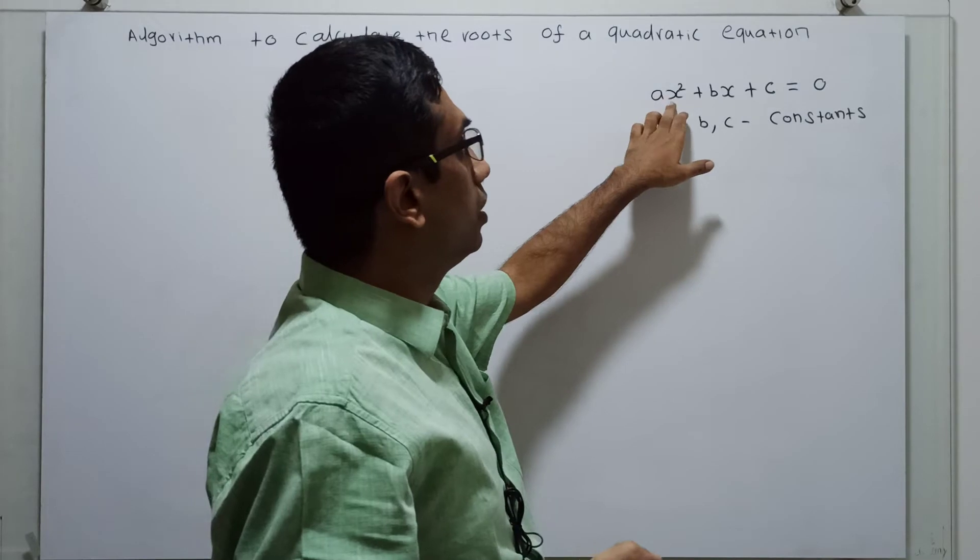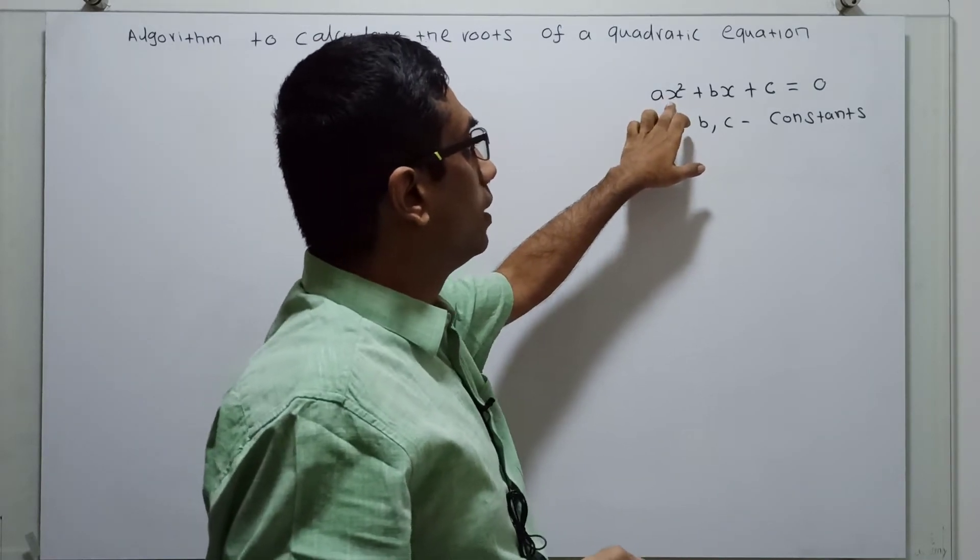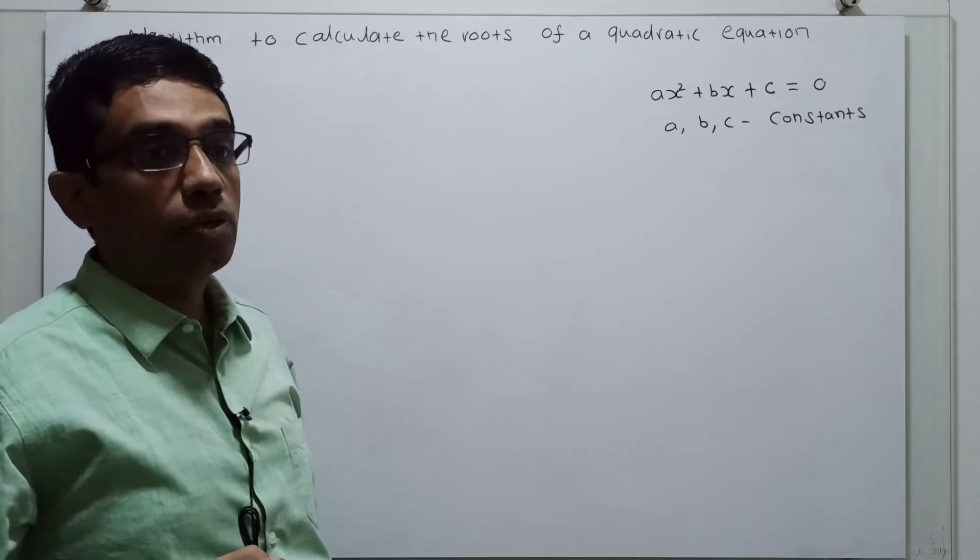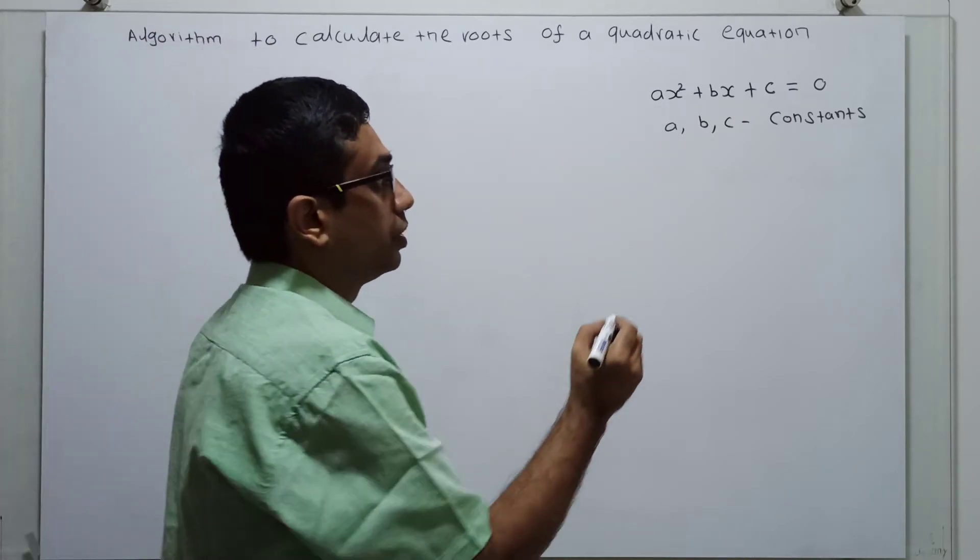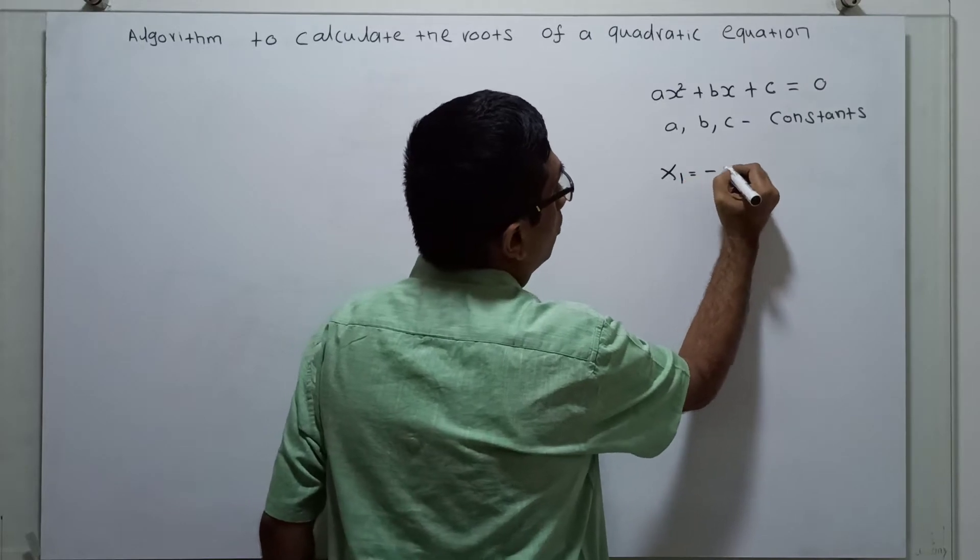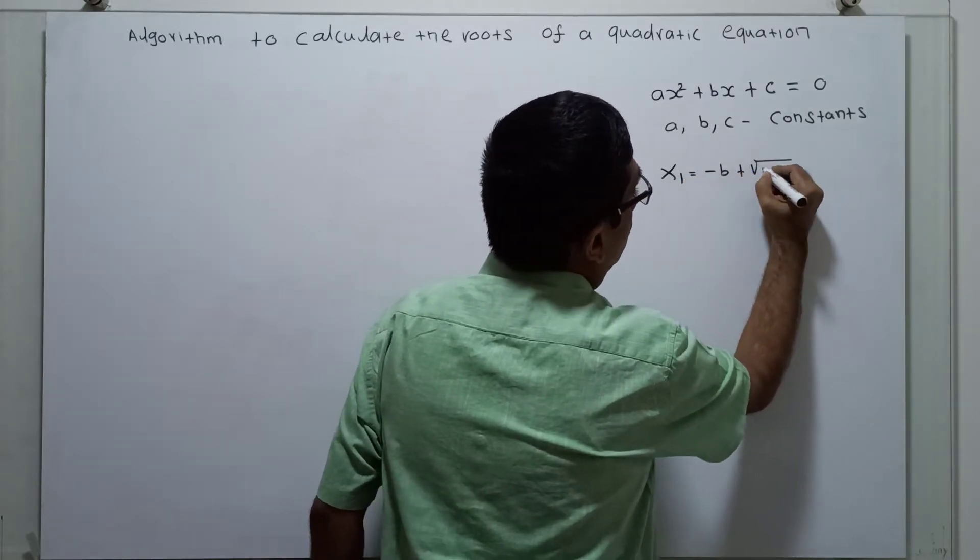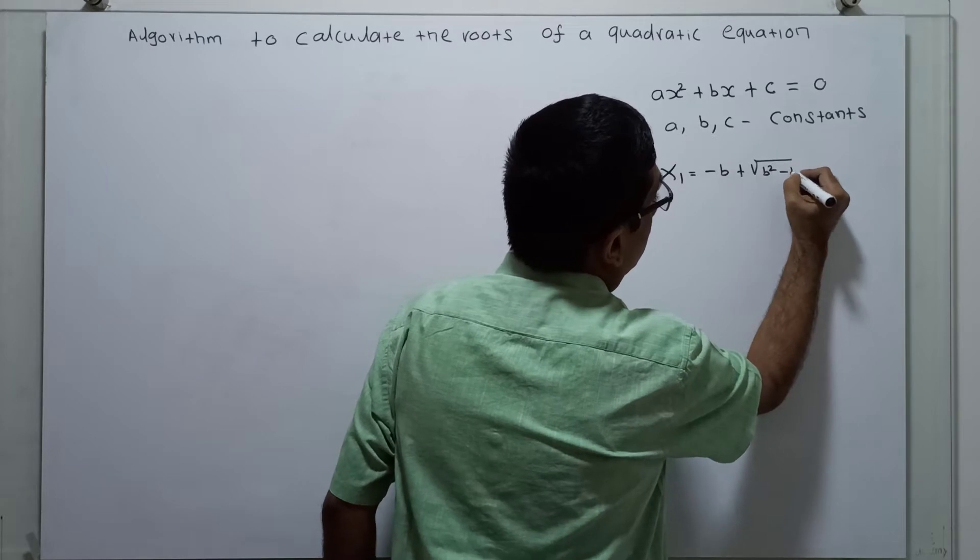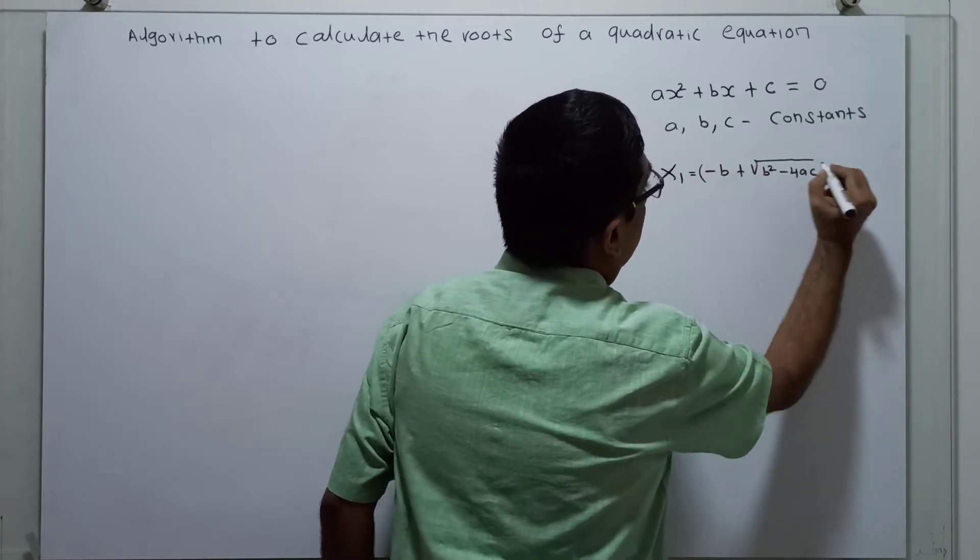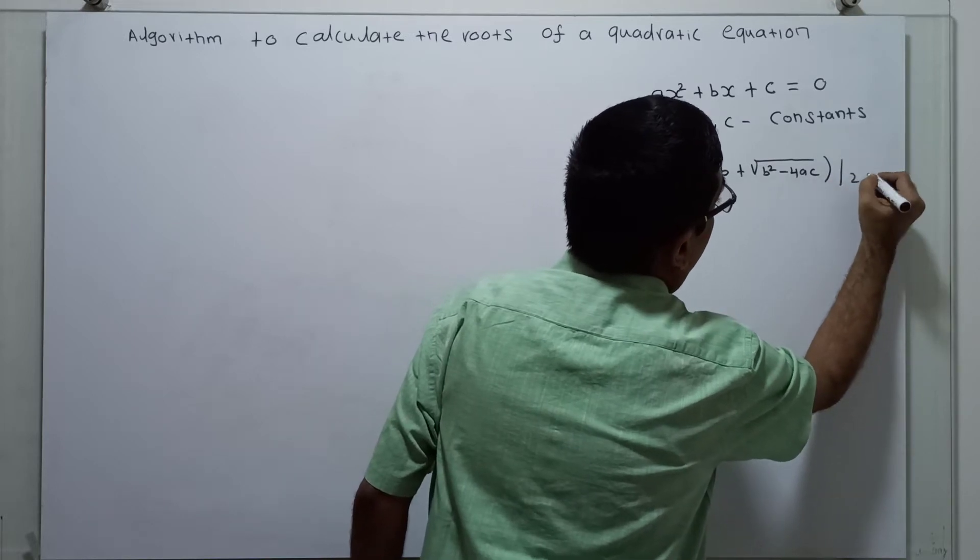The values of x which solves this quadratic equation is known as the roots of the quadratic equation. So, x1 equal to minus b plus square root of b square minus 4ac divided by 2a.